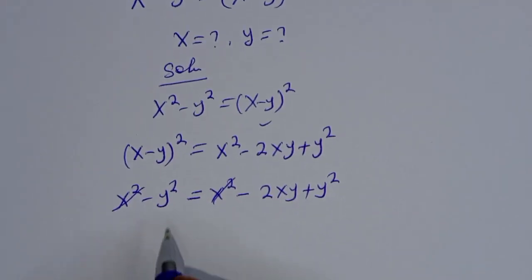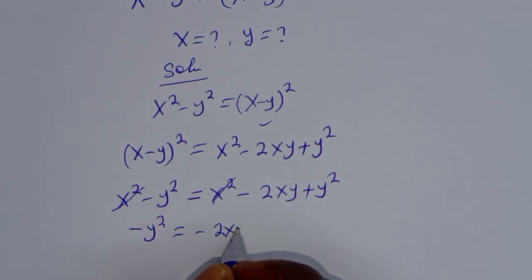this will cancel this, we have minus y squared is equal to minus 2xy plus y squared.